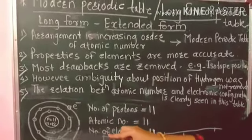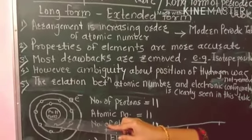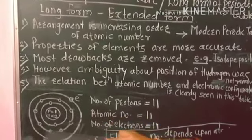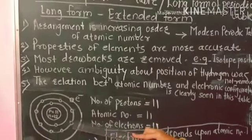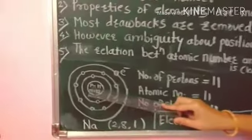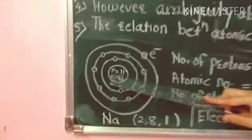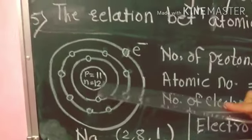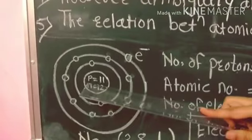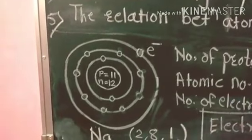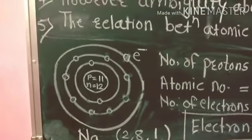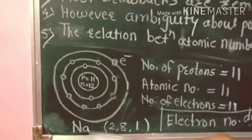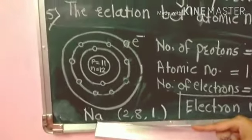Protons are present in the nucleus and electrons are revolving around the nucleus. Protons are positively charged and electrons are negatively charged. At the center there is the proton. Let us take the example of sodium.